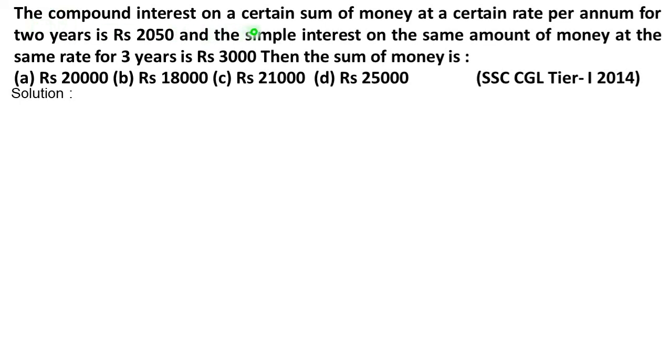The compound interest on a certain sum of money at a certain rate per annum for two years is Rs 2050, and the simple interest on the same amount of money at the same rate for three years is Rs 3000. Then the sum of money is: (a) Rs 20000 (b) Rs 18000 (c) Rs 21000 (d) Rs 25000.